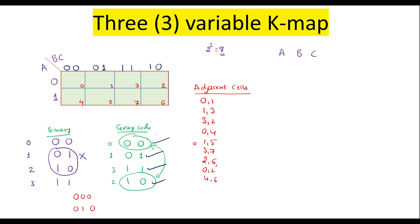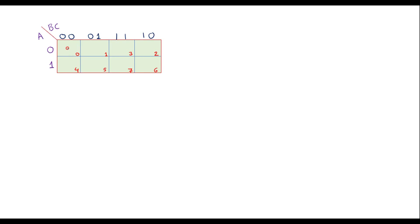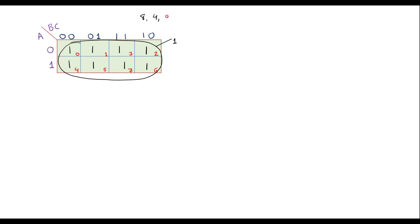Now we will see the different possible ways of grouping in a 3-variable KMAP. Suppose all 8 cells have 1; then the value of this will be 1. Grouping always starts from higher to lower — first group of 8 bits (octet), then 4 bits (called a quad), then 2 bits (called a pair), then we take cells independently.